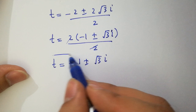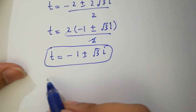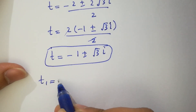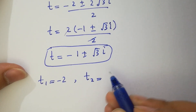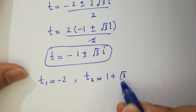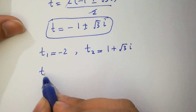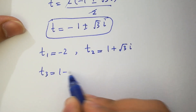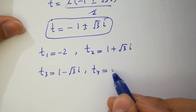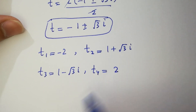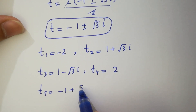This is also a complex solution. So finally we have 6 solutions: t1 equals minus 2, t2 equals 1 plus square root of 3i, t3 equals 1 minus square root of 3i, t4 equals 2, t5 equals minus 1 plus square root of 3i.